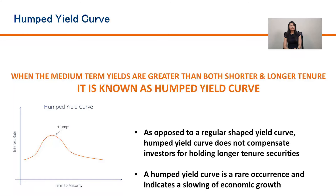The last type is the humped yield curve. This curve shows that medium-term rates are higher than both shorter and longer tenures. This is a very rare occurrence, and when we see such a curve it indicates that there is going to be an economic slowdown in that particular economy.